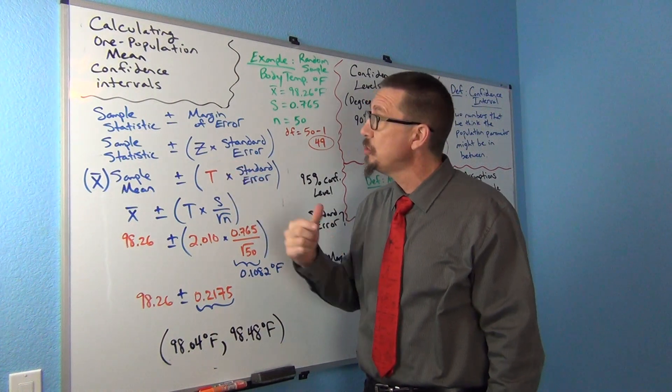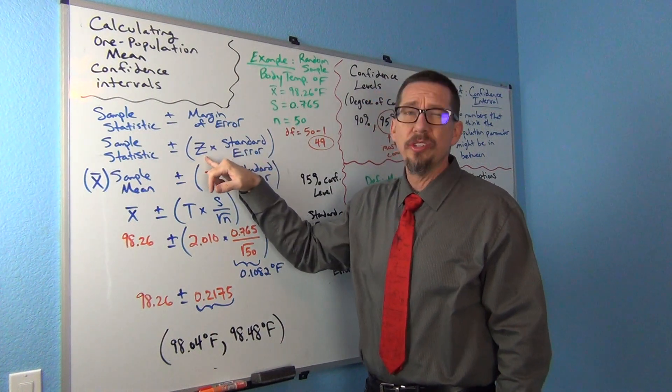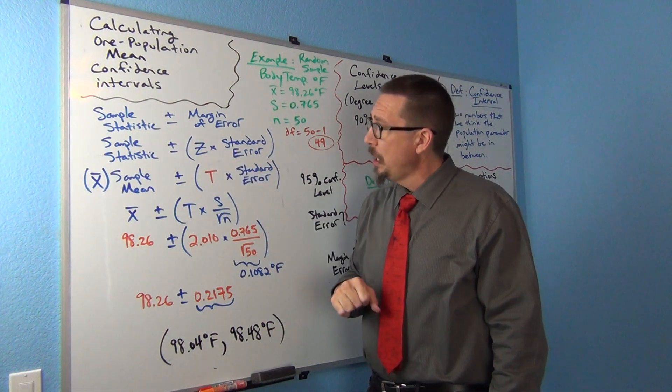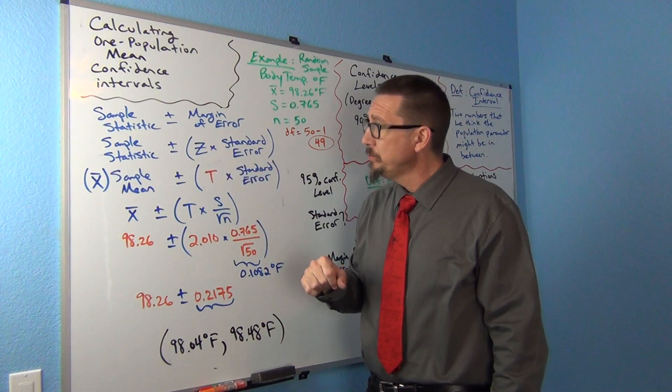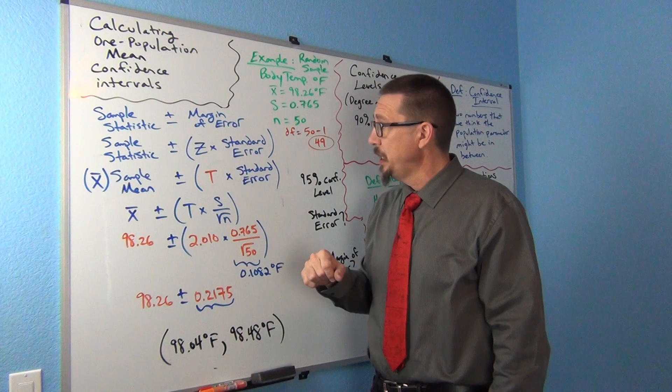We're going to use the critical value t-score for means. Z-scores are usually for proportions. Now, let's take a look at the formula.